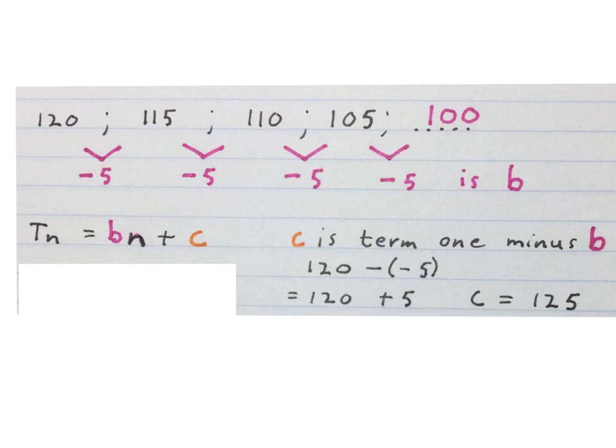You only understand this after you've done integers in grade 7. So the general term is Tn = -5n + 125.